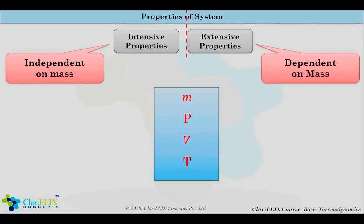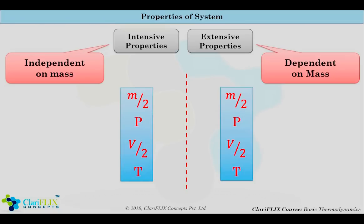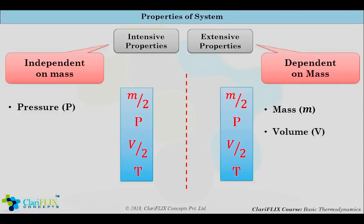Divide this control volume into two parts. Mass is reduced by half on both sides, so mass is dependent on mass — that is an extensive property. Pressure on both parts remains the same, which is independent of mass, so it comes under intensive property. Volume is reduced by half on both parts, so that is extensive property. Temperature on both parts is the same, so that is intensive property. Or consider your room as a system and divide it into two parts — pressure and temperature on both sides will definitely be same.